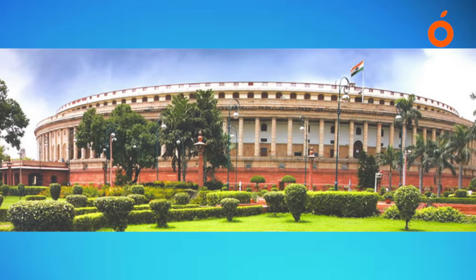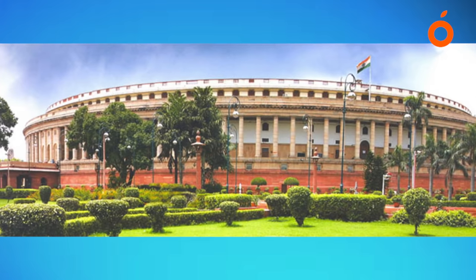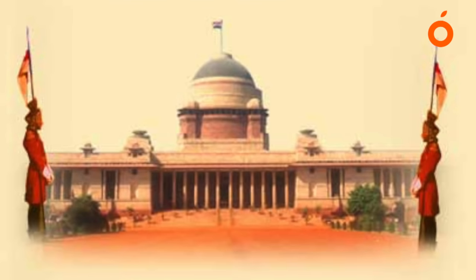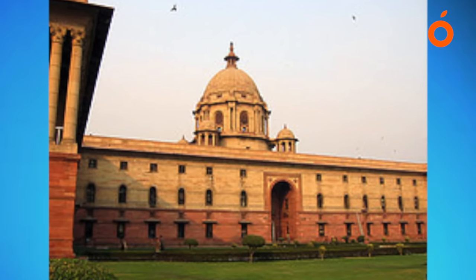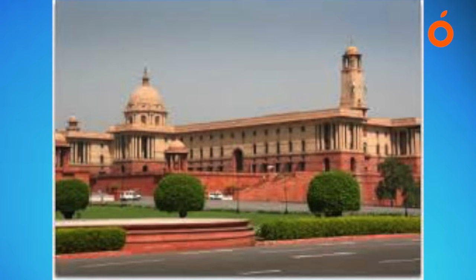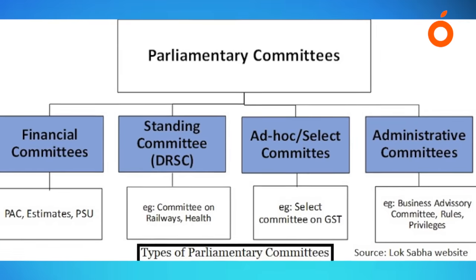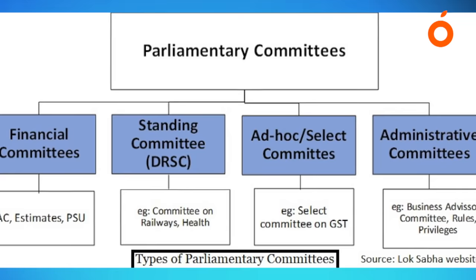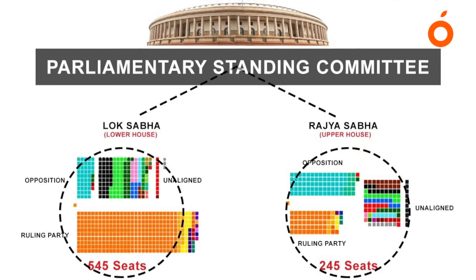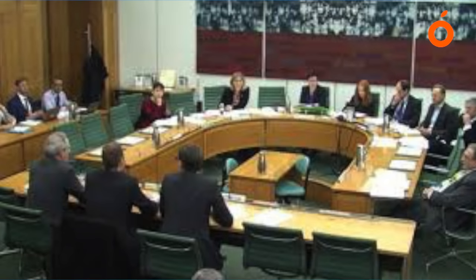The Committee on Public Undertakings consists of not more than 22 members. Fifteen are elected by Lok Sabha in accordance with the principle of proportional representation by means of single transferable vote, and seven members nominated by Rajya Sabha are co-opted in the committee. As with other committees, a minister is not qualified to be elected, and a member appointed as minister ceases to be a member. The term of members does not exceed one year.